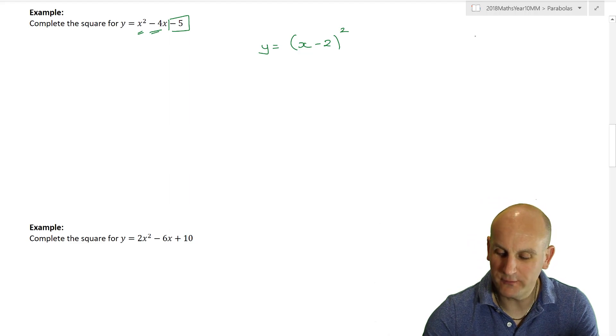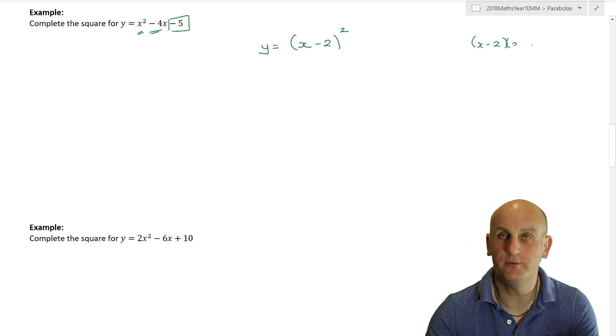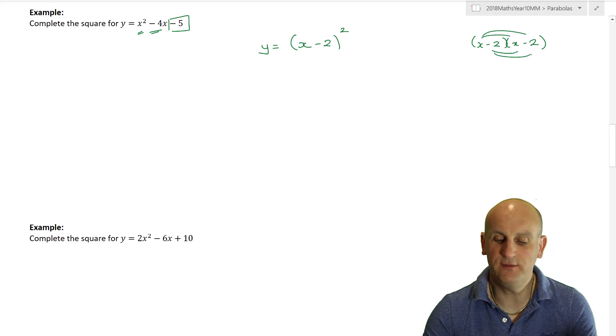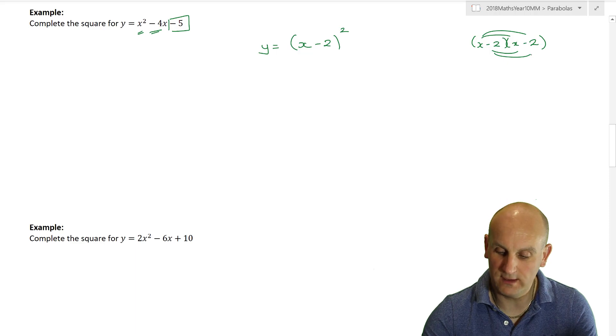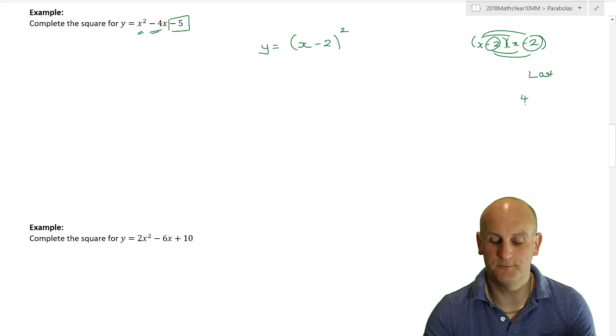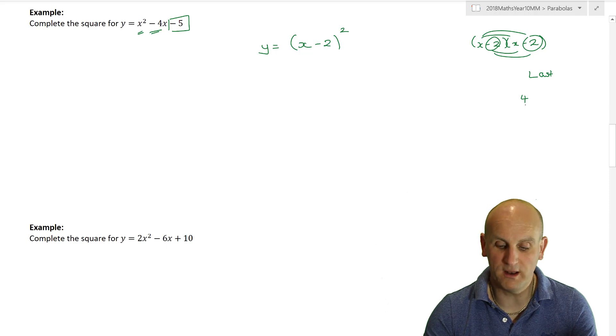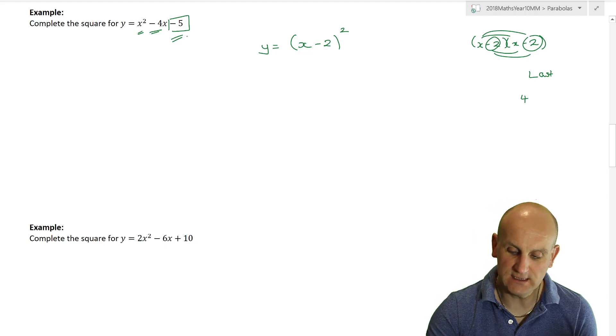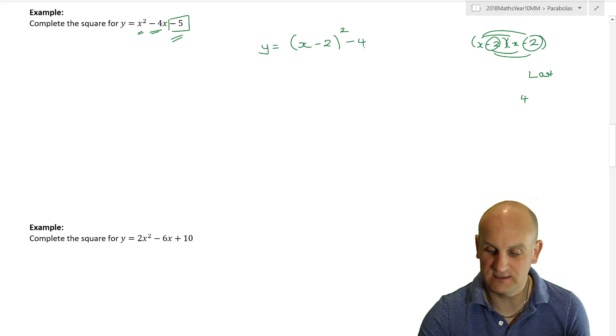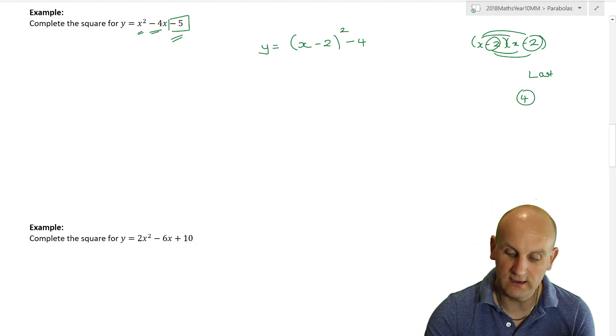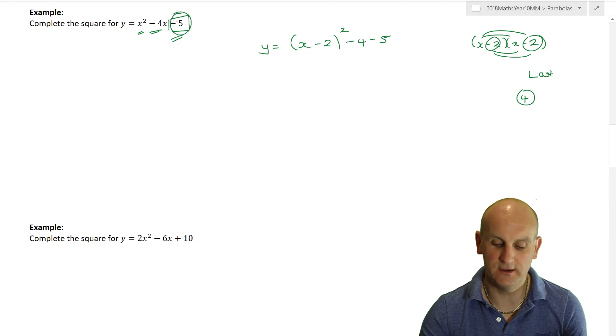Now, actually, we've done pretty much most of the hard work, but I have to make sure I'm going to end up this negative 5 afterwards. When I do x minus 2 times x minus 2, using that foil of first, outside, inside and last, in this situation, the only thing I'm really interested in foil is the L for the last. What happens when I multiply minus 2 by minus 2? Hopefully, I'm going to get plus 4. But the problem is I don't want plus 4. I need to get to minus 5.